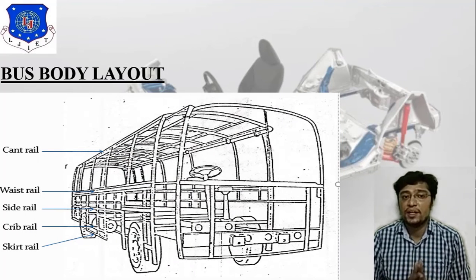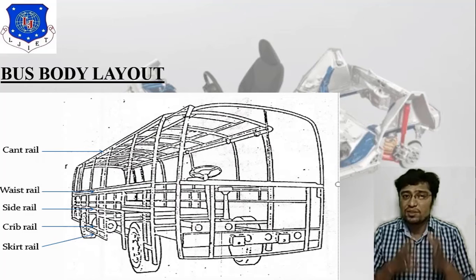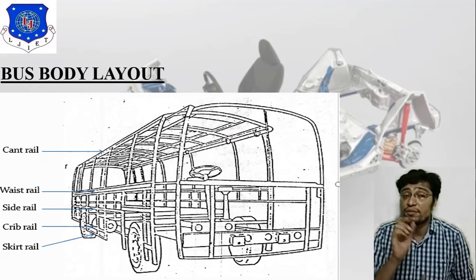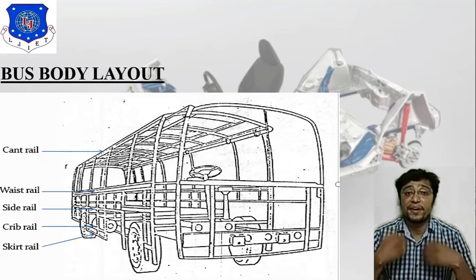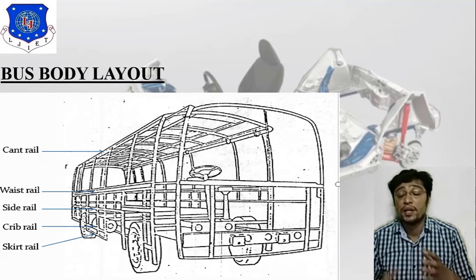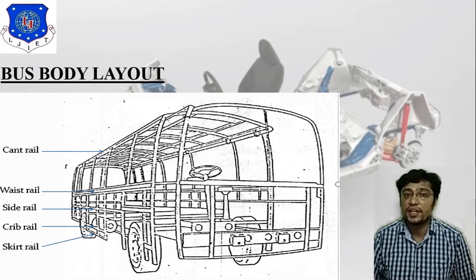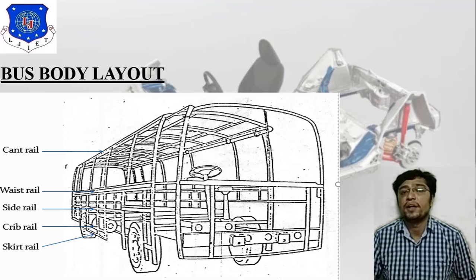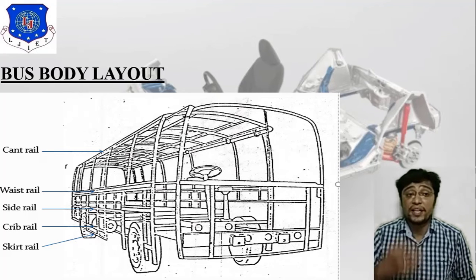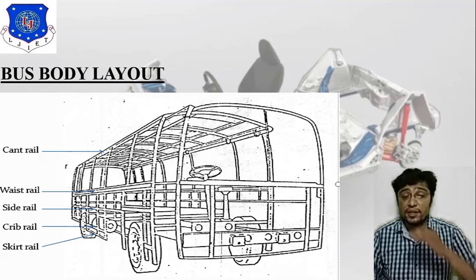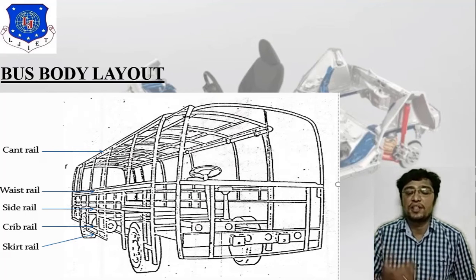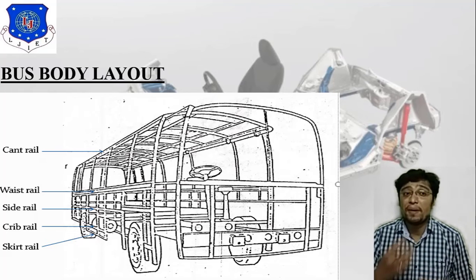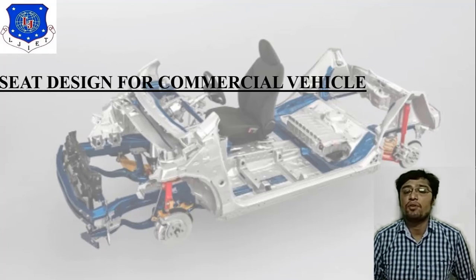Next is the bus body layout — the main structure of the bus body. Here you can find the top portion, steering, driver sitting area, passenger sitting area, front axle, and rear axle. There are also component names such as cant rail for the top portion, waist rail for the center portion, and at the bottom: side rail, creep rail, and skirt rail. This is the bus body layout concept.